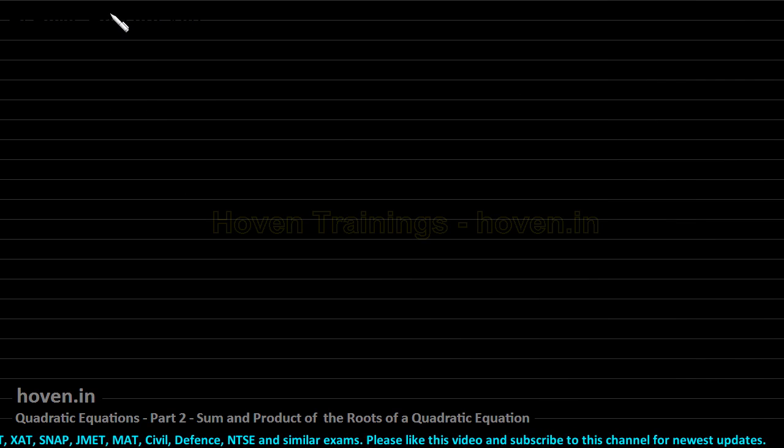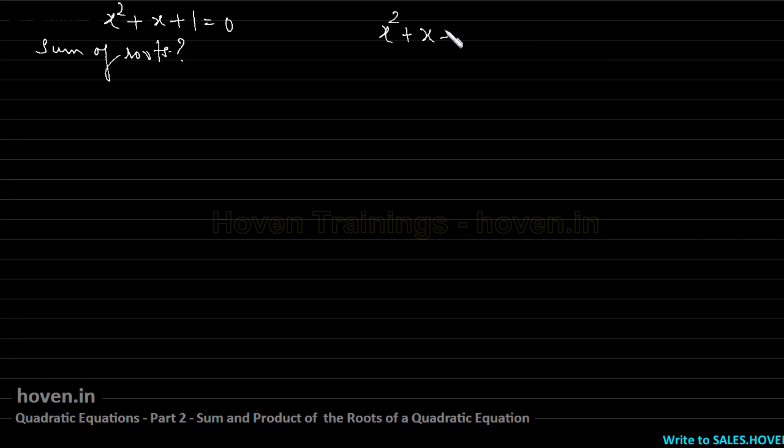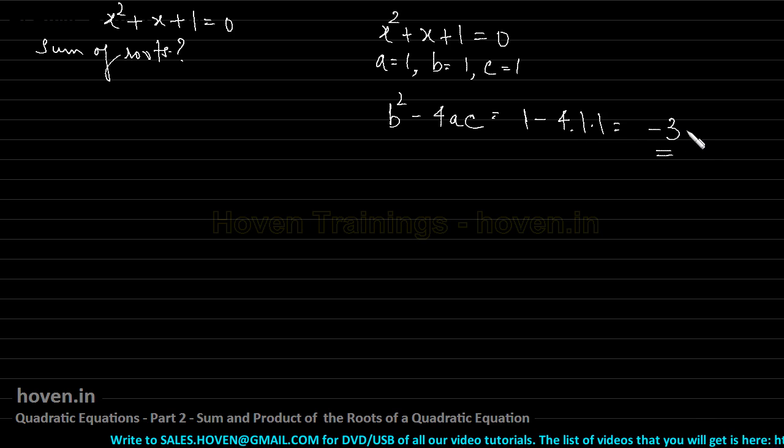So he says find out the sum of the roots of this quadratic equation. Now if somebody has to go through the longer method then this quadratic equation has no solution. An examiner might put a question like this which is very tricky. If you try to solve this equation x square plus x plus 1 equal to 0 with a equal to 1, b equal to 1, c equal to 1, then you will very soon find that b square minus 4ac in this case is 1 minus 4 into 1 into 1 is equal to minus 3 which is negative.